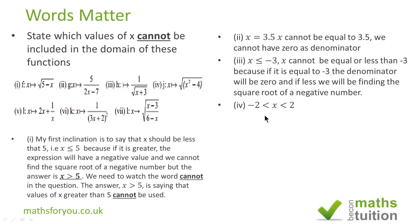x cannot be less than or equal to minus 2. And for subsection 4, we say that x cannot have values between 2 and minus 2. Suppose x is 0: 0 squared is 0, so we'd have the square root of minus 4, which is undefinable — we cannot find the square root of minus 4. So x cannot have values between 2 and minus 2.